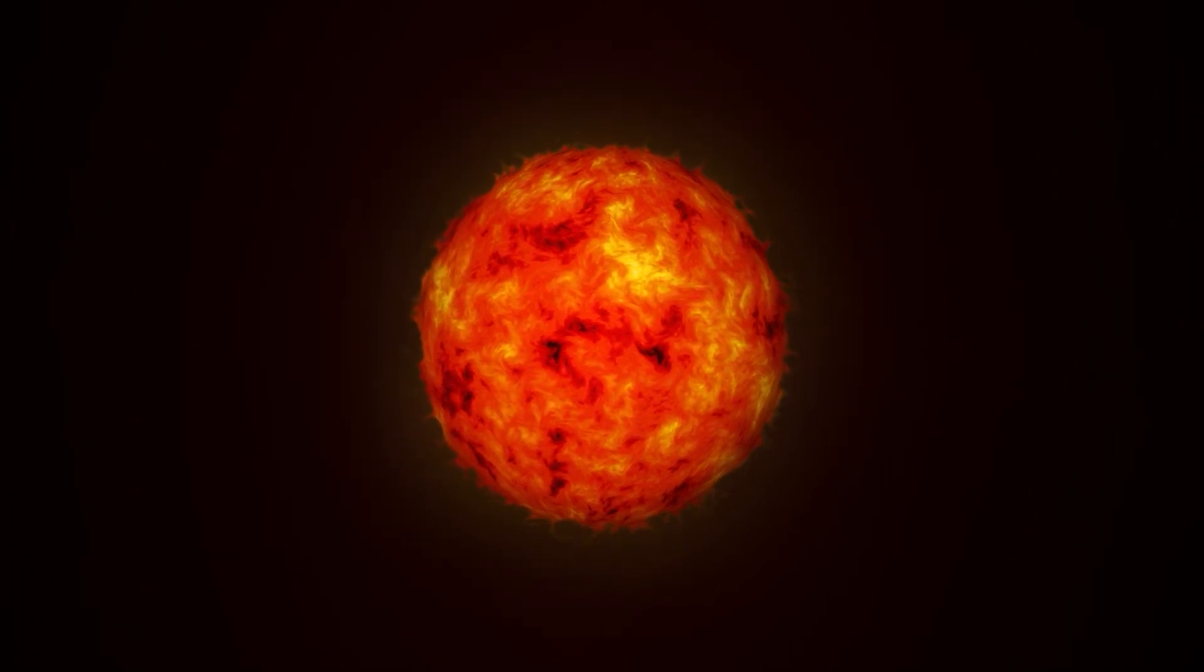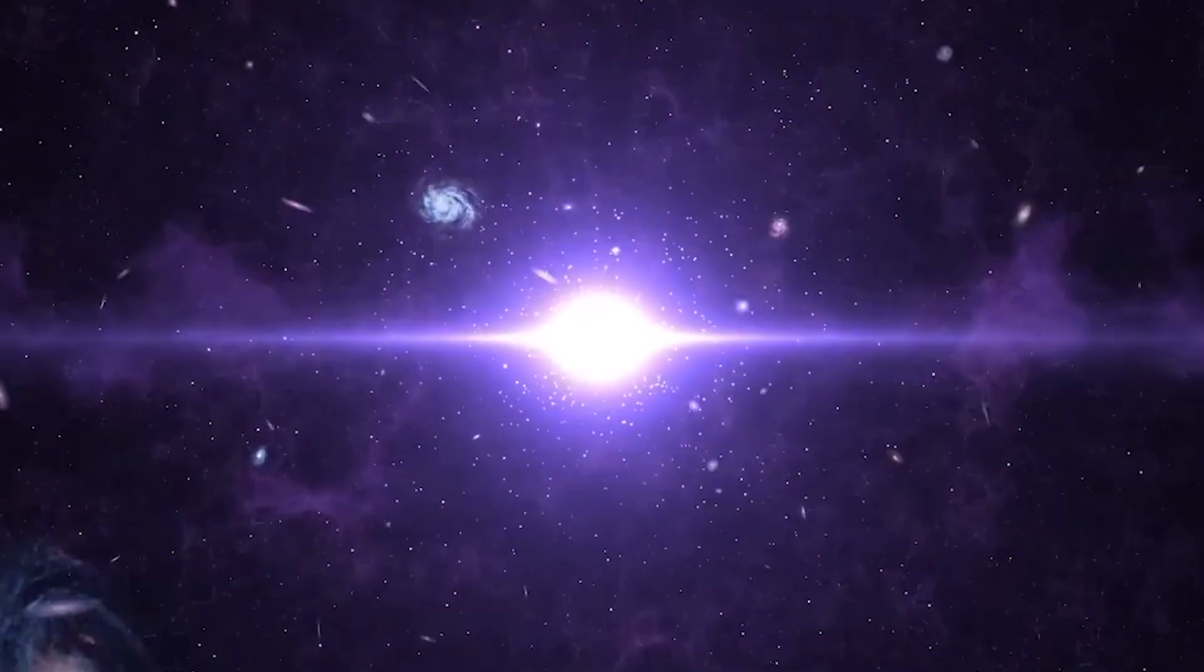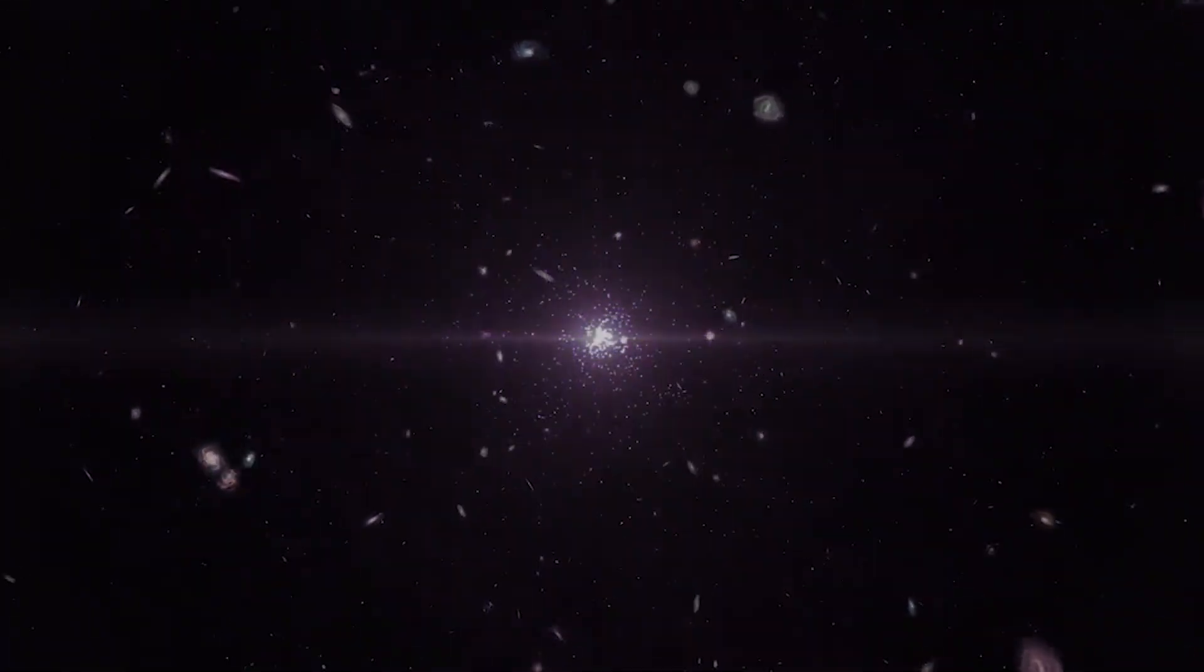Stars similar to our Sun will become red giants after about 9 to 10 billion years. And after billions more years, they'll fade away completely, leaving only white dwarfs and clouds of gas and dust from which new stars can be born.